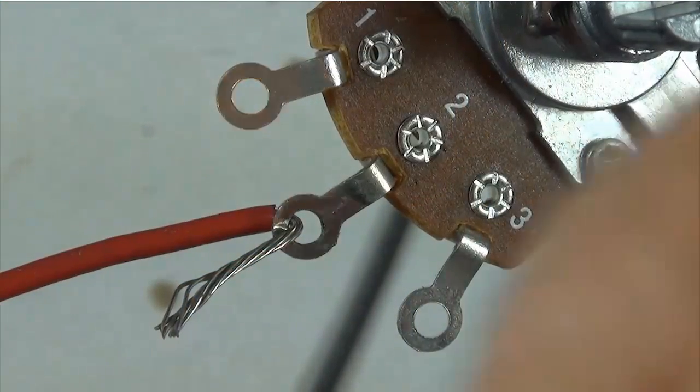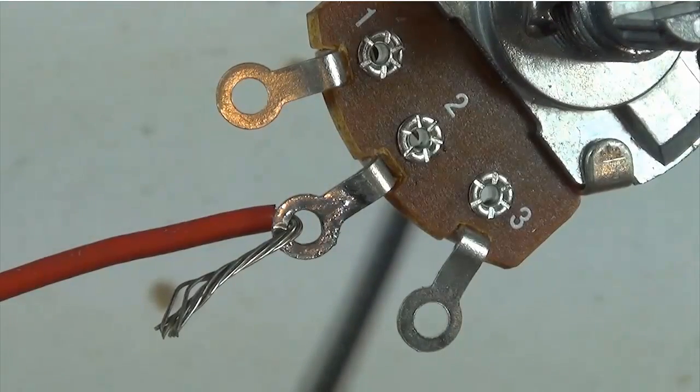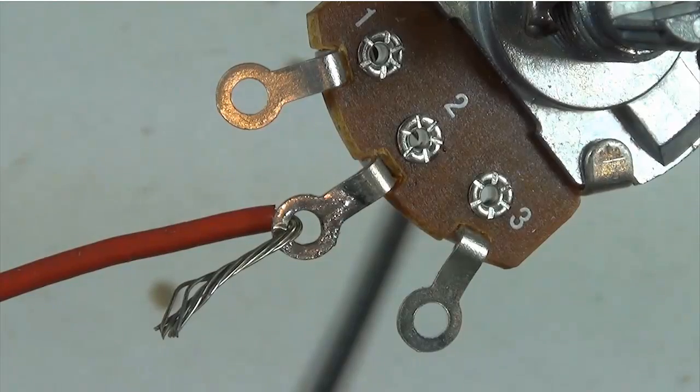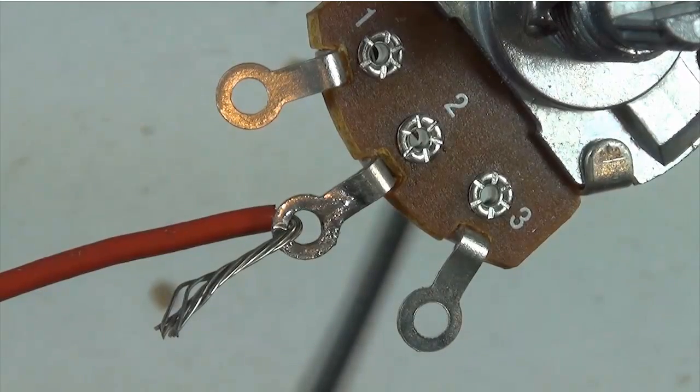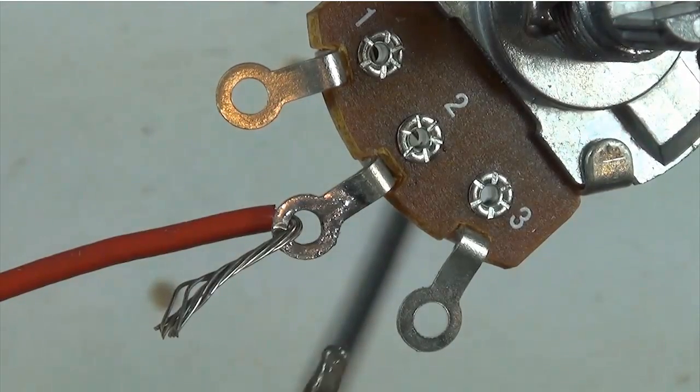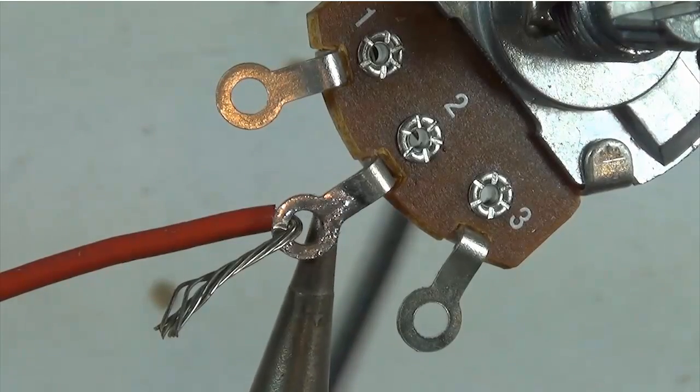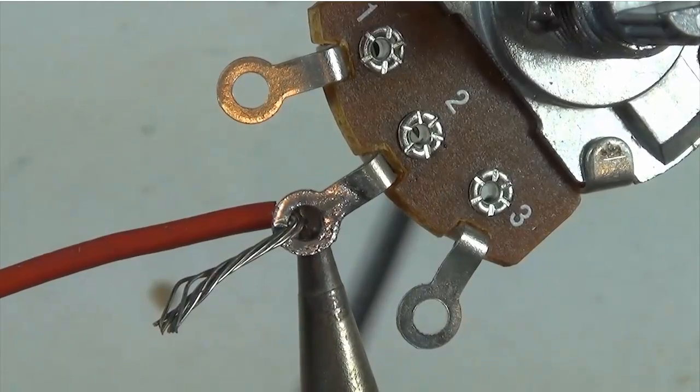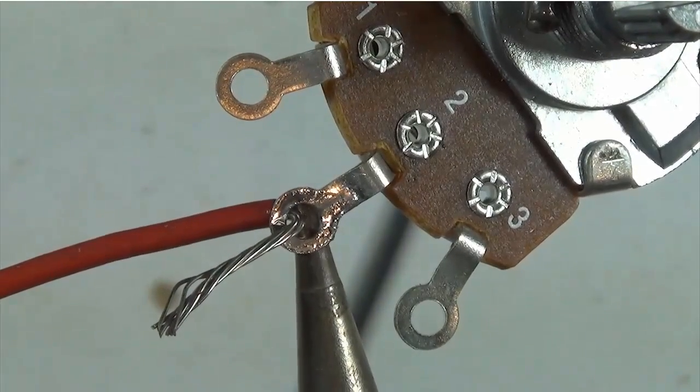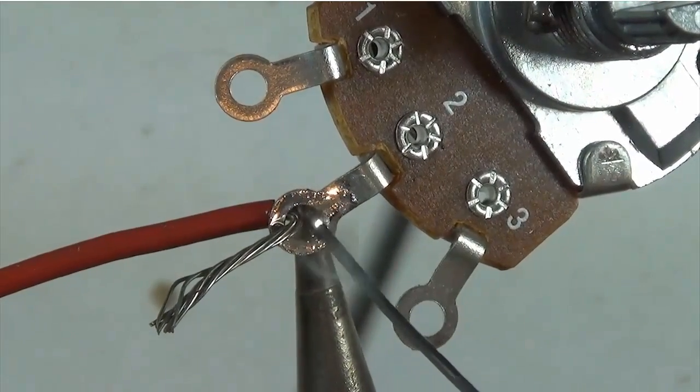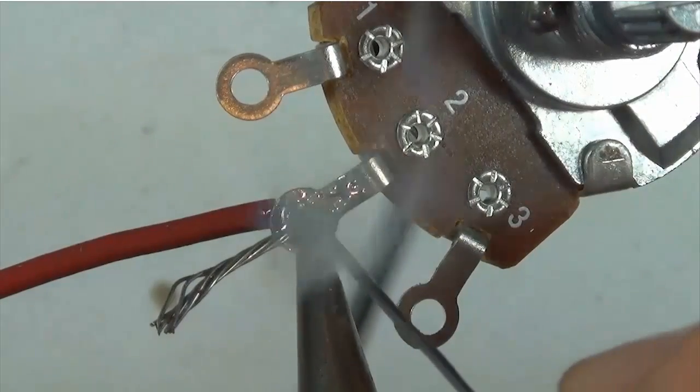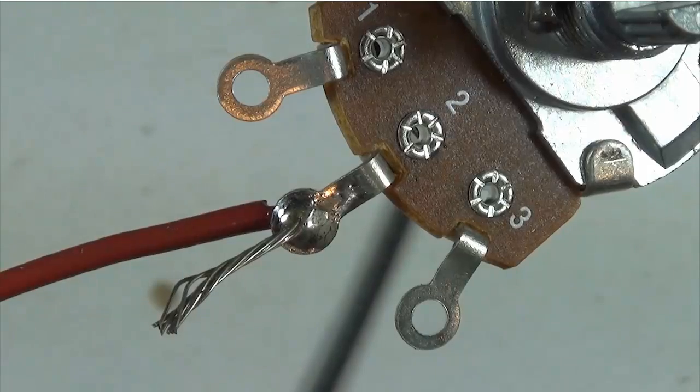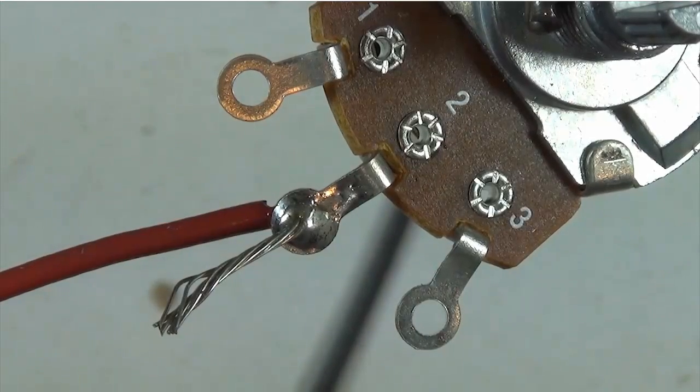Now I'm ready to solder, so I'm going to take my soldering iron, wipe it clean in the damp sponge. I have it set to 650 degrees. I'm using 60-40 solder. I'm going to use the flat part of my chisel tip on the soldering iron and put it underneath the lug and just touch the wire. I'm going to wait a minute and then I'm going to bring the solder in.